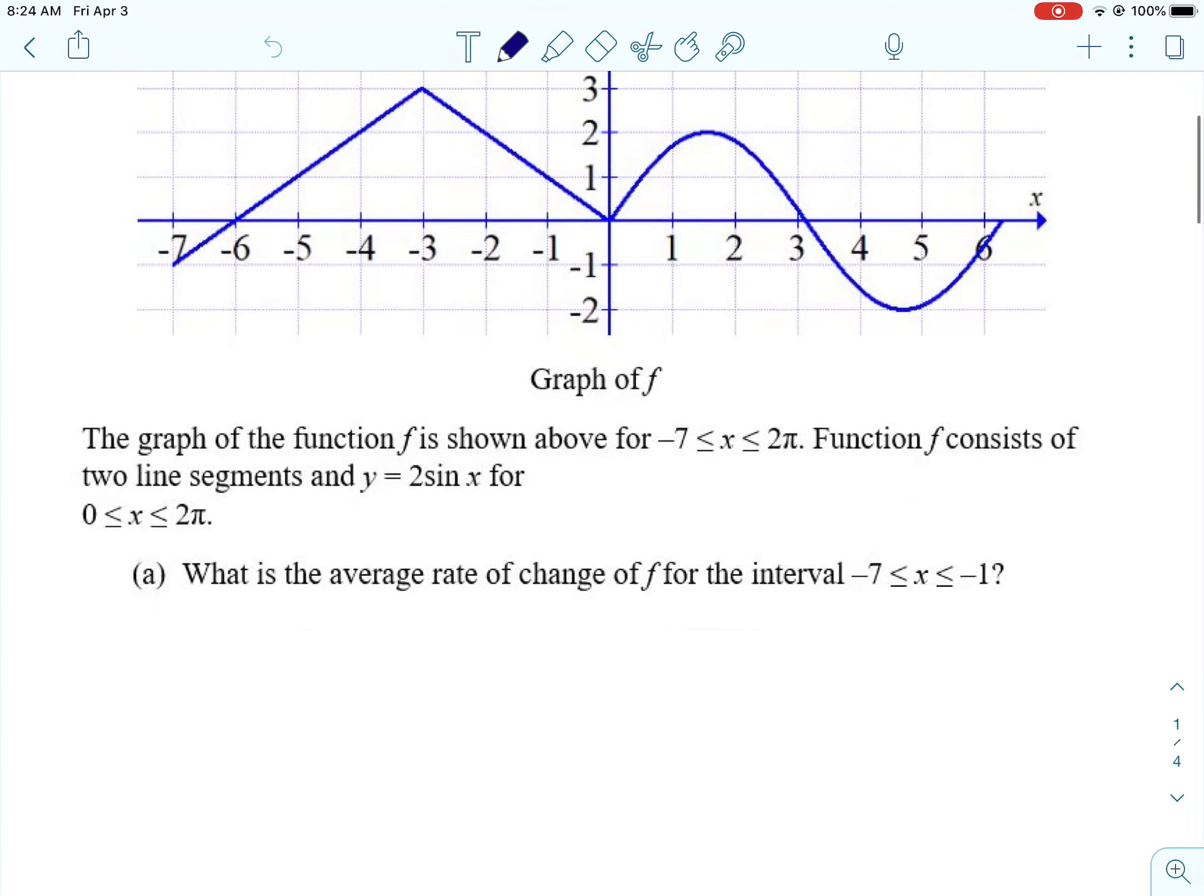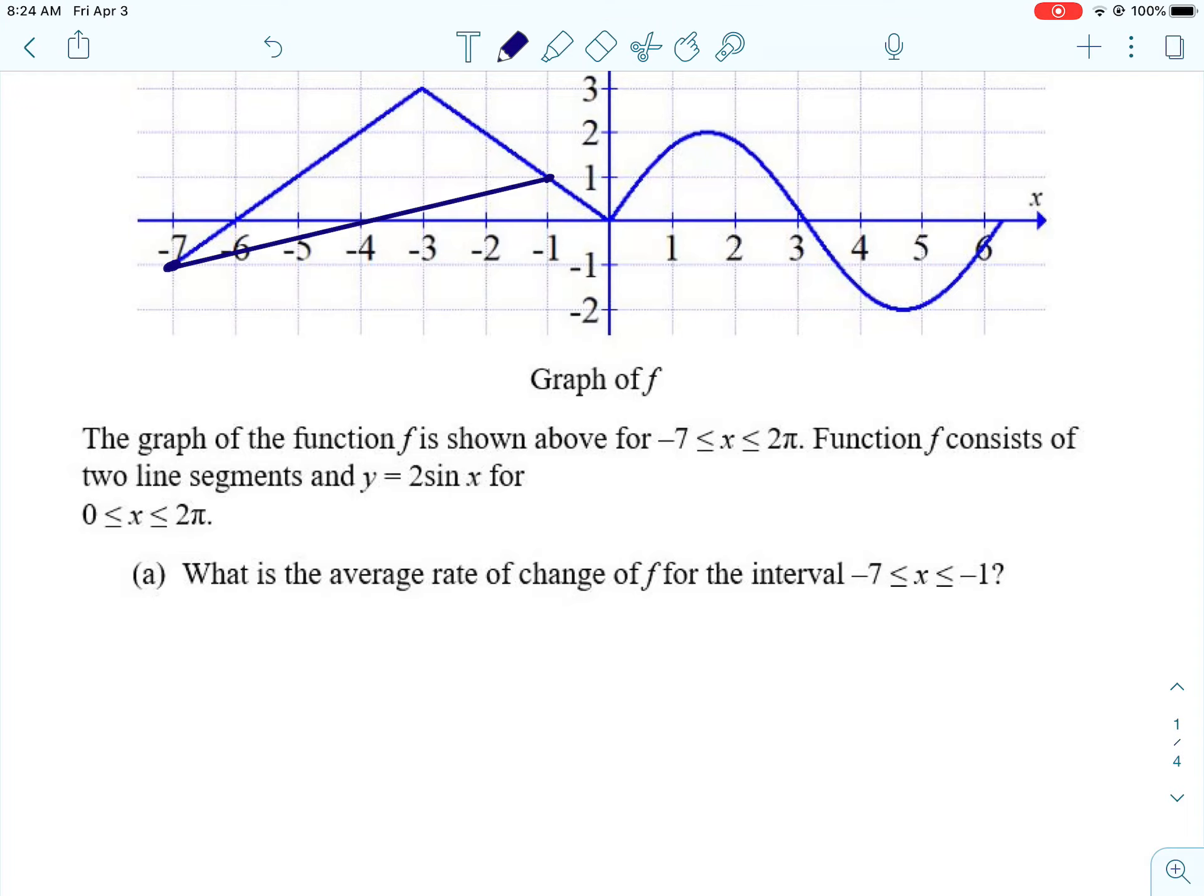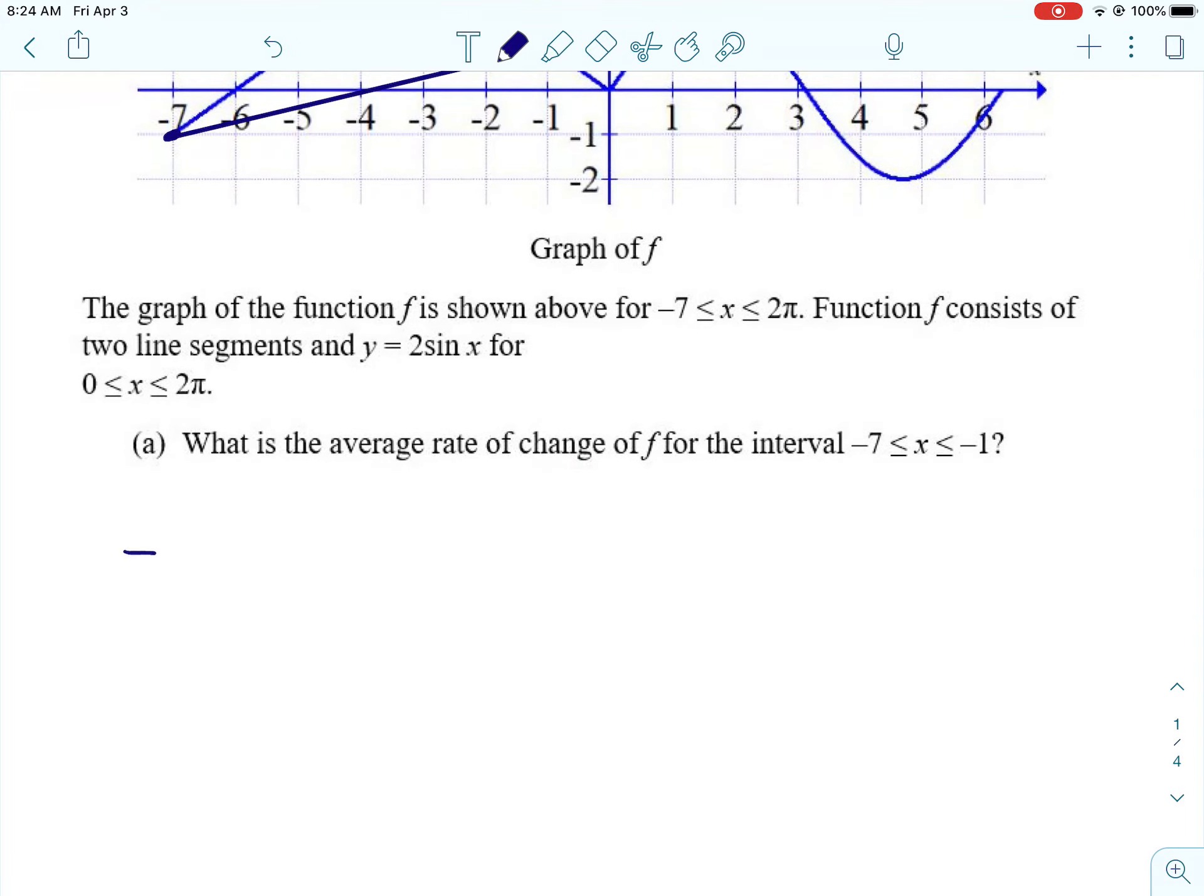And the first question is, what is the average rate of change of F on the interval from negative 7 to negative 1? So the average rate of change, they're just asking us to find the slope. So we're going to be going from the point negative 7 to the point negative 1. So this is the slope we're looking for. Now, they're going to want to see some work. We can't just look at that slope and tell the answer and get full credit.